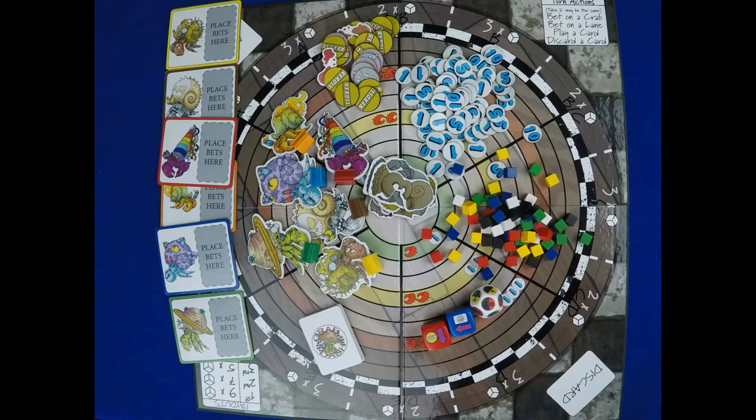Let's look at the prototype components. You have the main game board, crabs, dice, cards, pearls, and tokens.